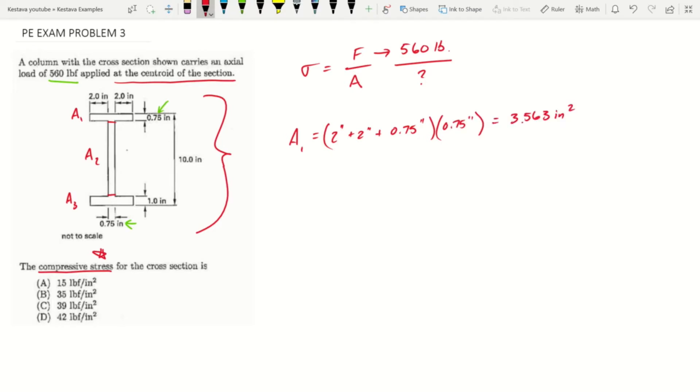Area two is just the reduced web section. Because based on how I've cut, we've chopped off those web sections. You actually need to take the full depth of the member and subtract out the thickness of each flange. So that's 10 inches minus 0.75 inches minus 1 inch times thickness of web, which again is 0.75, similar to the top flange. That's going to get you 6.188 inches squared.